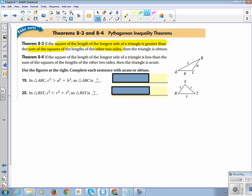And 8.4 says, if the square of the longest side of a triangle is less than the sum of the squares of the other two sides, then the triangle is acute.